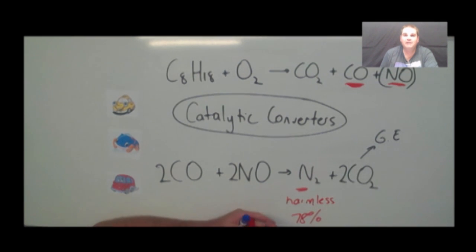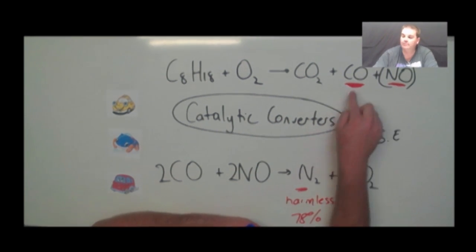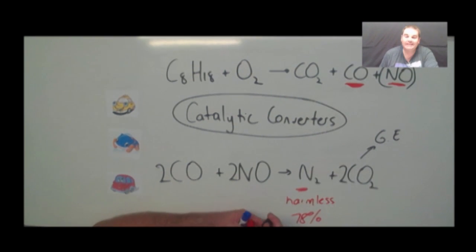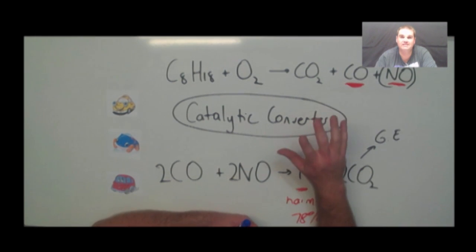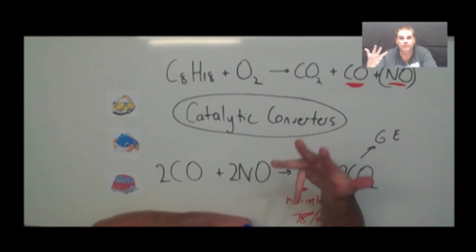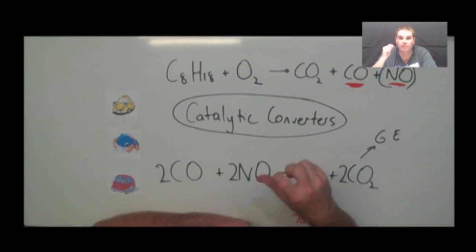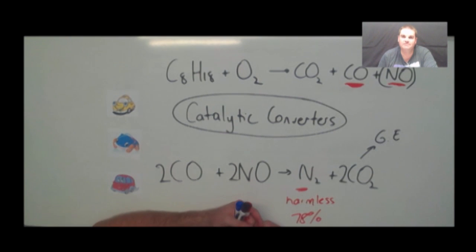So as you go back over this video, make sure you understand what primary and secondary pollutants are. Primary pollutants are those emitted directly into the atmosphere, like nitrogen monoxide, carbon monoxide, or carbon dioxide. Secondary pollutants are those formed by reactions in the atmosphere, such as nitrogen dioxide, ozone, or peroxyacetyl nitrates. Understand the conditions needed for photochemical smog: no wind, a temperature inversion, presence of sunlight, and pollution. Make sure you understand those equations, can write them out, and can do the one for catalytic converters. Thanks guys, see you later.